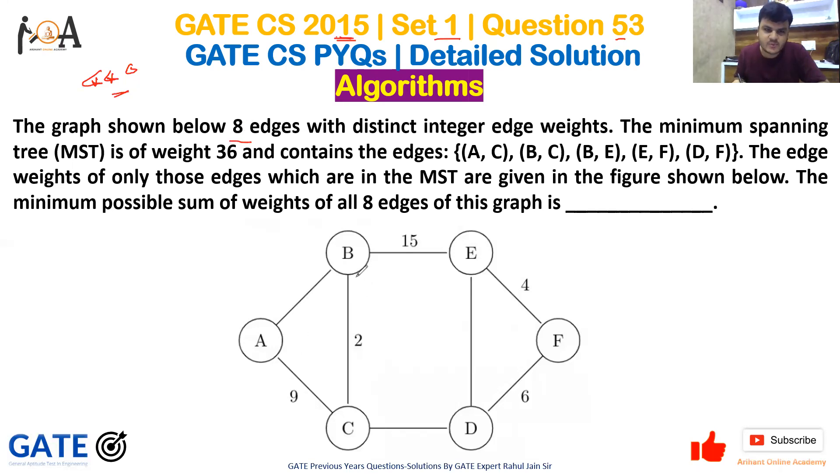In the graph we have eight edges: A-B, B-C, A-C, C-D, B-E, E-D, D-F, and E-F. That's one, two, three, four, five, six, seven, eight edges total, with distinct integer edge weights.